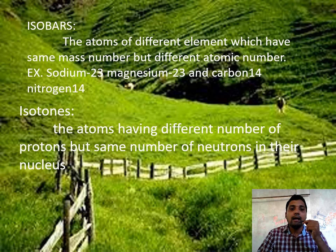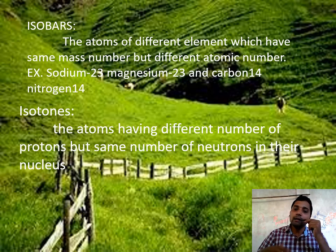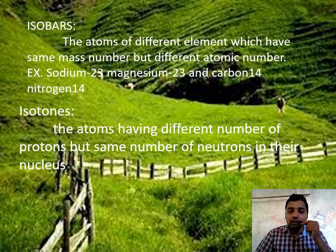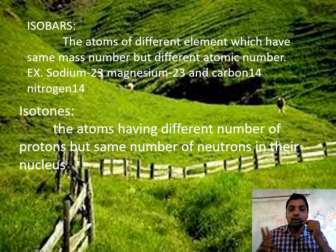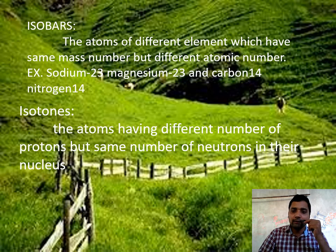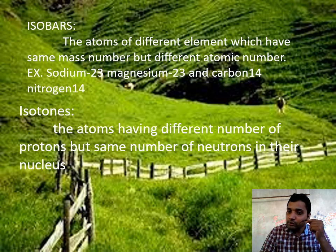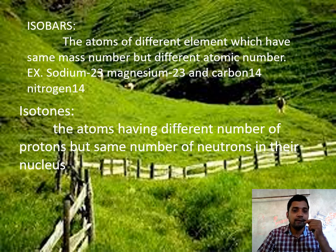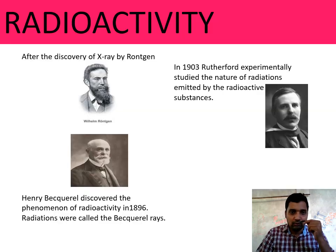Another category is isotones. Isotones are atoms having different atomic numbers and different mass numbers, but the same number of neutrons. The proton number is different and the atomic number is different, but the number of neutrons in the nucleus is the same — those are in the category of isotones.